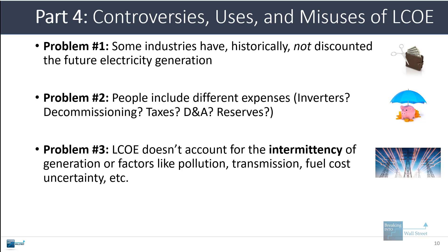The more major problem is that levelized cost of energy doesn't account for qualitative factors, such as the fact that renewables have intermittent generation — if the sun is shining or the wind is blowing, great, but if not, you're not going to get any power from the asset. They also don't account for things like pollution, carbon emissions, transmission costs, or the fact that you might need to construct more of a system around the asset to even use it. There's also uncertainty around fuel costs in terms of prices and supplies.